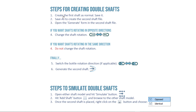First, you're going to create the first shaft as normal — in this case, we're creating a double threaded first shaft, which adds a few more steps — and then save it. Then you need to take a copy of the first shaft by doing a Save As to create the second shaft file. At this point we've got two IPT files that are exactly the same.